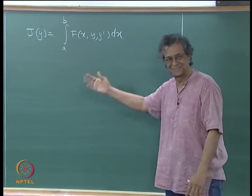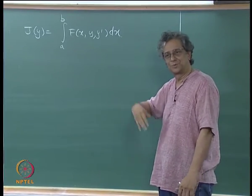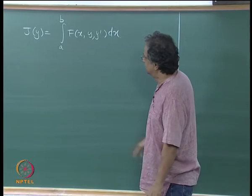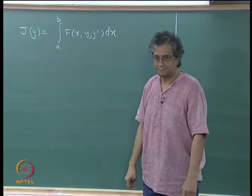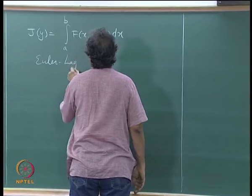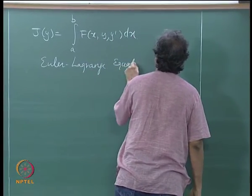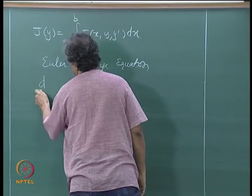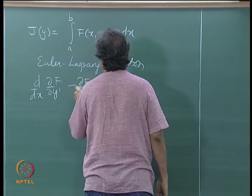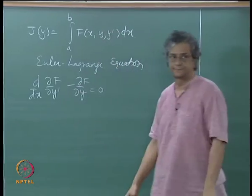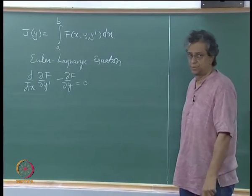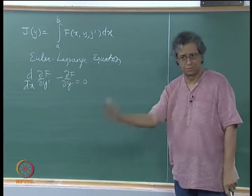I am not going to do the second variation in this class — just as a piece of information, you can go look it up. You can set the first variation to zero and get the corresponding Euler-Lagrange equation, which is what we derived in the last class. We applied it to the shortest path between two points in the 2-dimensional Euclidean plane.